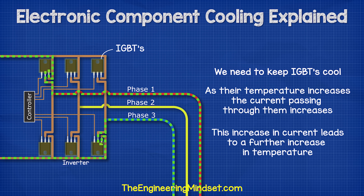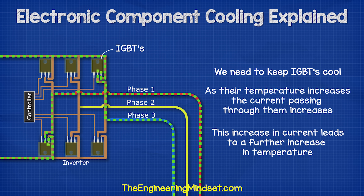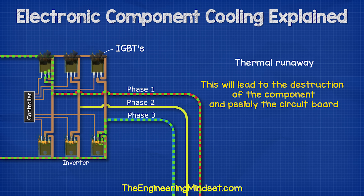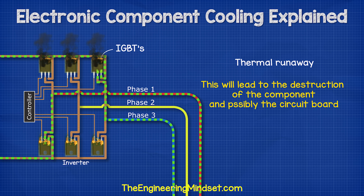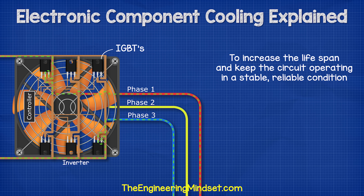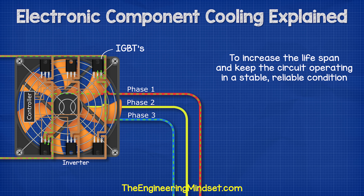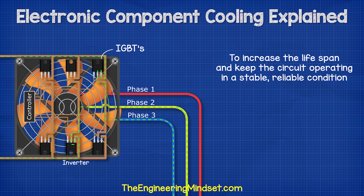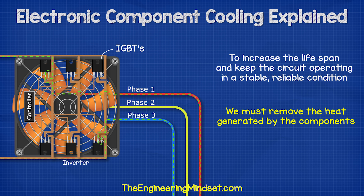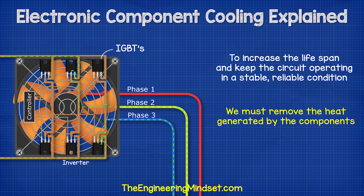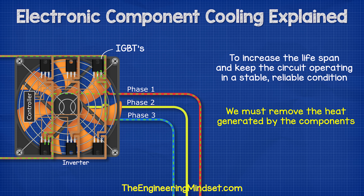This additional current creates heat, which in turn allows more current to flow. And so the component reaches a thermal runaway and will eventually just destroy itself. So to increase the lifespan of the component and the circuit board, as well as to keep the components operating in a stable, reliable condition, we need a way to remove the thermal energy which the component generates.